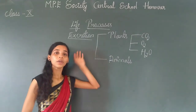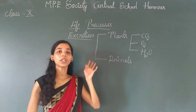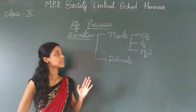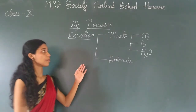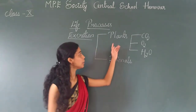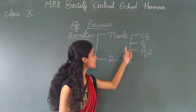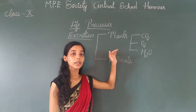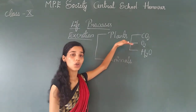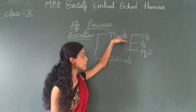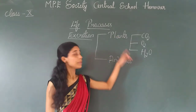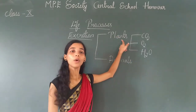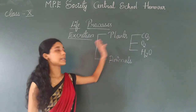Excretion is the process of removal of toxic waste from the body. Excretion occurs in both plants and animals. We will study how excretion occurs in plants first, and then in animals.